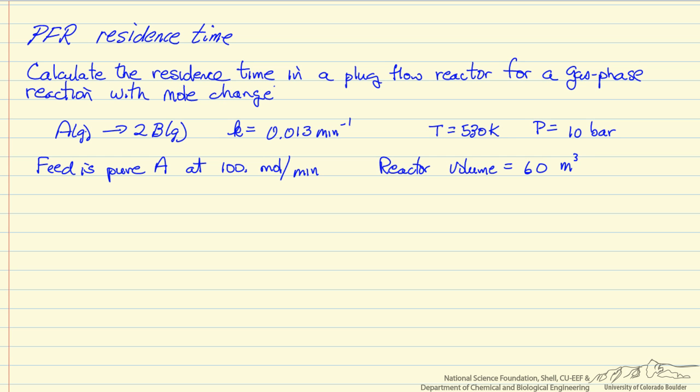In this example, we want to calculate the actual residence time in a plug flow reactor where we have a gas phase reaction with a mole change. The residence time is going to be different from the space time because the volumetric flow rate changes as we move through the reactor. We have a reaction with 1 mole forming 2 moles, and the information on the reactor and the temperature and pressure are given.